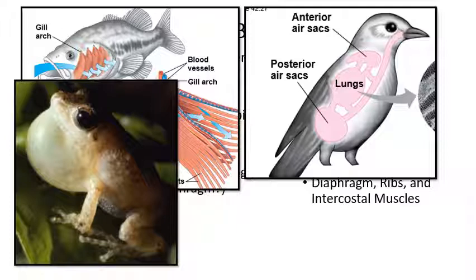A frog is a positive pressure breather. It sucks a mouthful of air into its mouth, then using the muscles in its mouth it pushes that air into the lungs. The lungs are not surrounded by a rib cage — they're just little balloons that are blown up thanks to the positive air pressure in the frog's mouth.